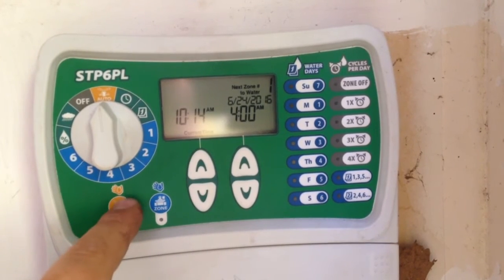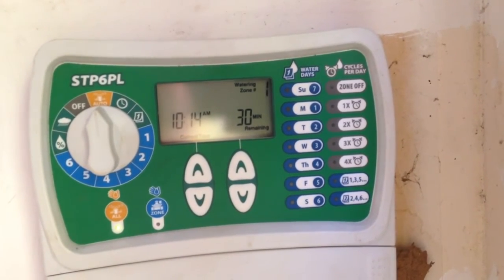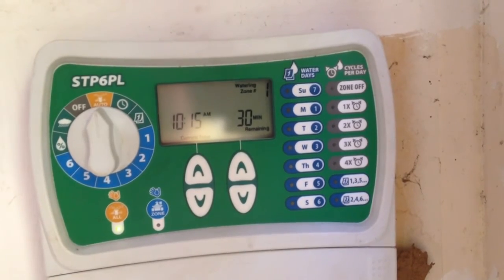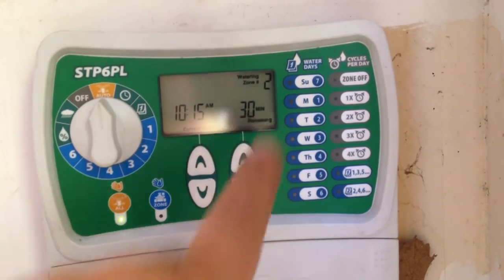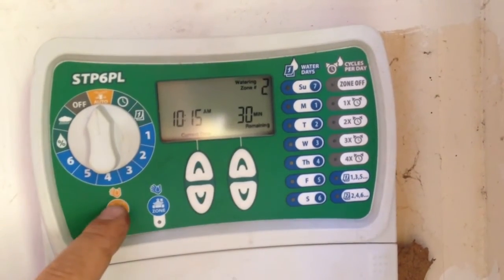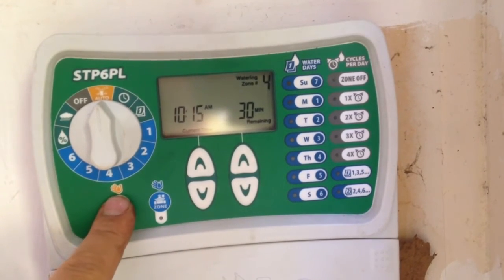The other thing is if you want to run all zones, you can hit all. It's going to start on zone 1. And then if I hit the button again, the all zones button will go to zone 2. Same thing as zone 3, 4, 5.